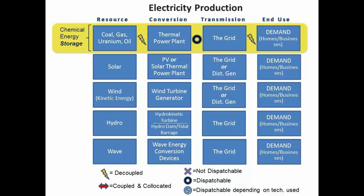Through the grid to the end use, this is essentially decoupled because the grid is already there. There are some restrictions on how much energy can flow to certain locations depending on congestion on the grid, but more or less if you're generating electricity onto the grid, it can get to a lot of places.